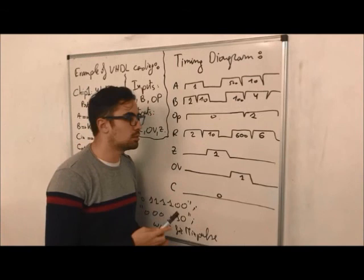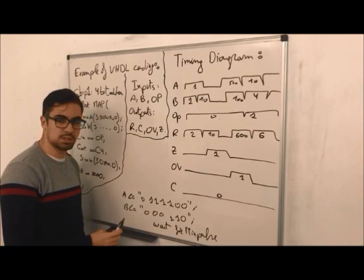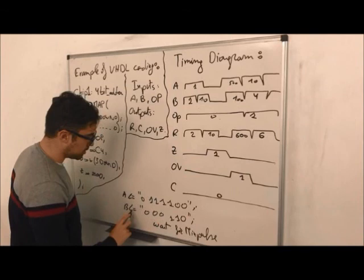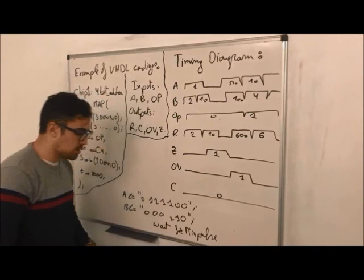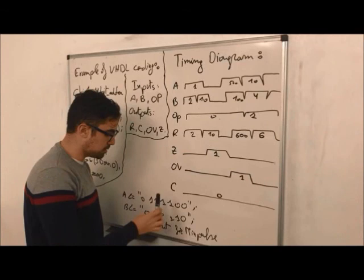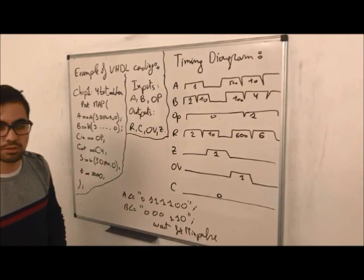How did we code this timing diagram in Xilinx software? First, we declare the inputs A and B, which are always the inputs as declared. This is the binary number and this is the second number in binary. This is the WaitForMinPulse, which means to wait for the operation to be done. This is how the timing diagram works and its coding in VHDL coding language — the 10-bit subtractor-adder VHDL code. This was our 10-bit subtractor-adder project. We hope the explanation was enough for the viewer to understand. Thank you.